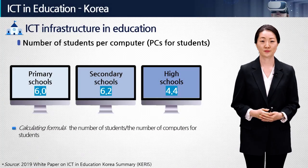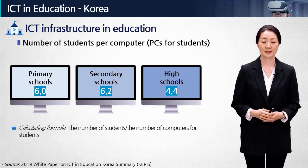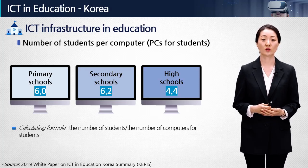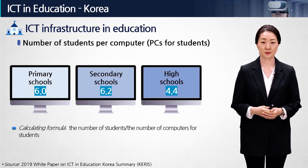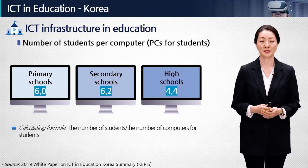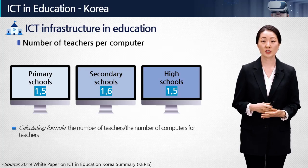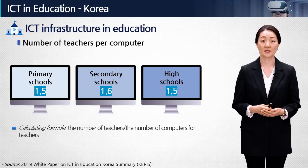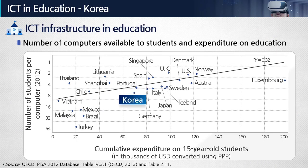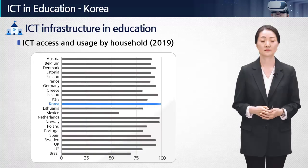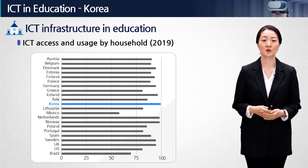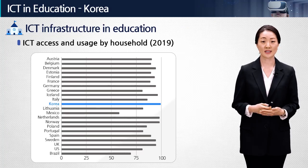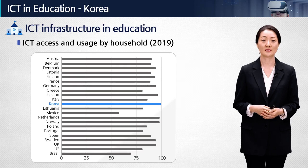First, how is the infrastructure? The number of students per computer in primary school is 6.0, meaning 6 students have to share one computer. It goes similar in secondary school, and high school students have the highest accessibility at 4.4. Meanwhile, one teacher can access more or less 1.5 computers across all types of schools. Looking at OECD data, the status of infrastructure in education in Korea, comparing to other OECD countries, seems to be moderate. Also, Korea is one of the top tiers in terms of ICT access and use by households, so overall the ICT infrastructure in education in Korea is in good condition.